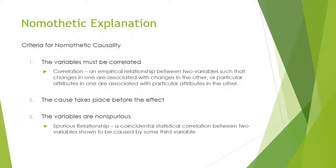The cause takes place before the effect — my opinion cannot make me black or older. But in a generalization, one can say the older someone is, the more likely they are to have this opinion, or black people are more likely to do something than white people. Cause and effect: cause has to come before the effect. And the variables have to be non-spurious. Spurious means coincidental — a coincidental statistical correlation between two variables shown to be caused by some third variable. It can't just be coincidental; it has to be real.